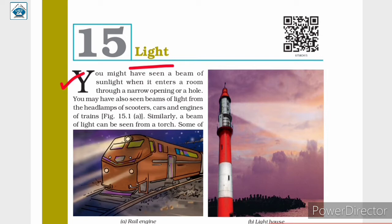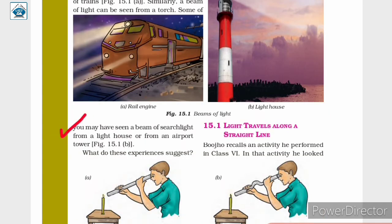Similarly, a beam of light can be seen from a torch. You may have also seen a beam of searchlight from a lighthouse or from an airport tower, as shown in figure 15.1.